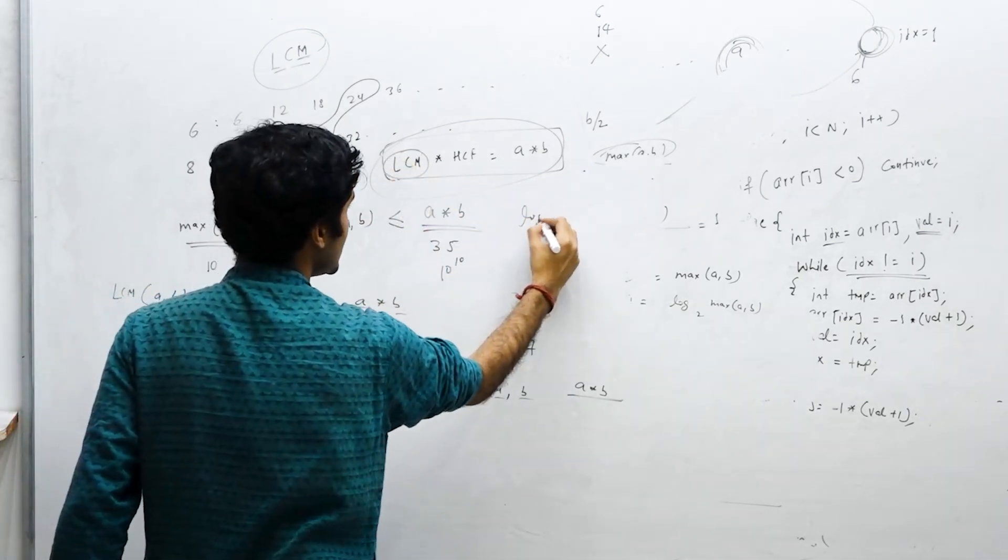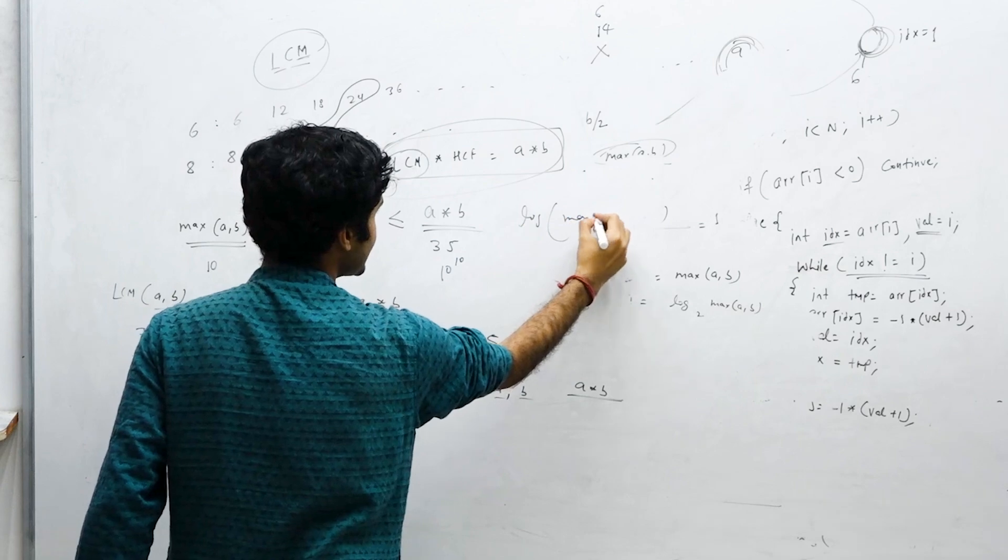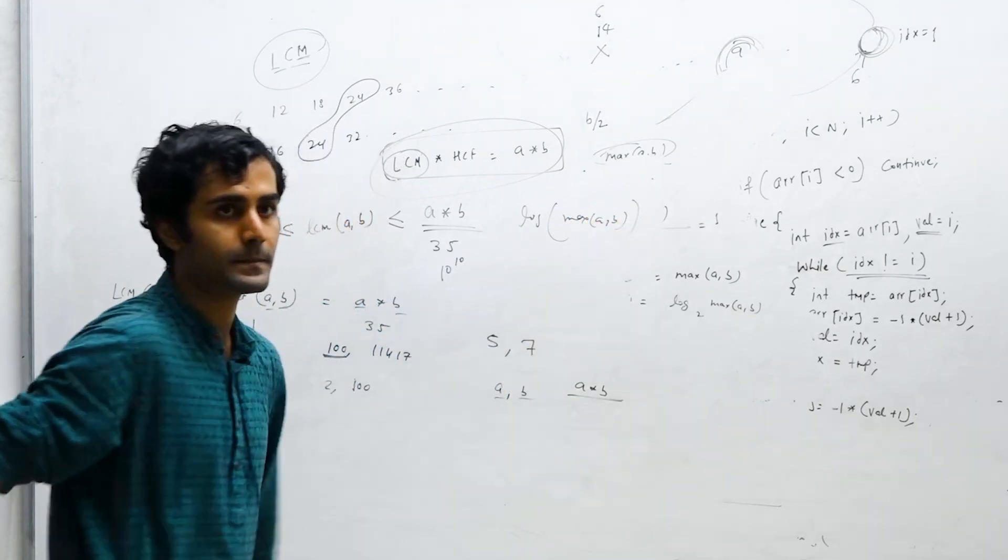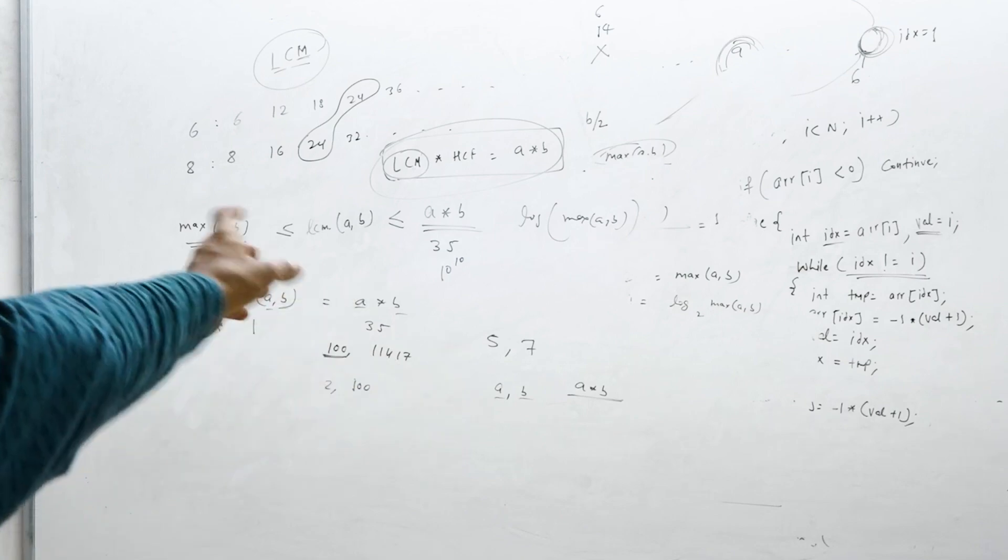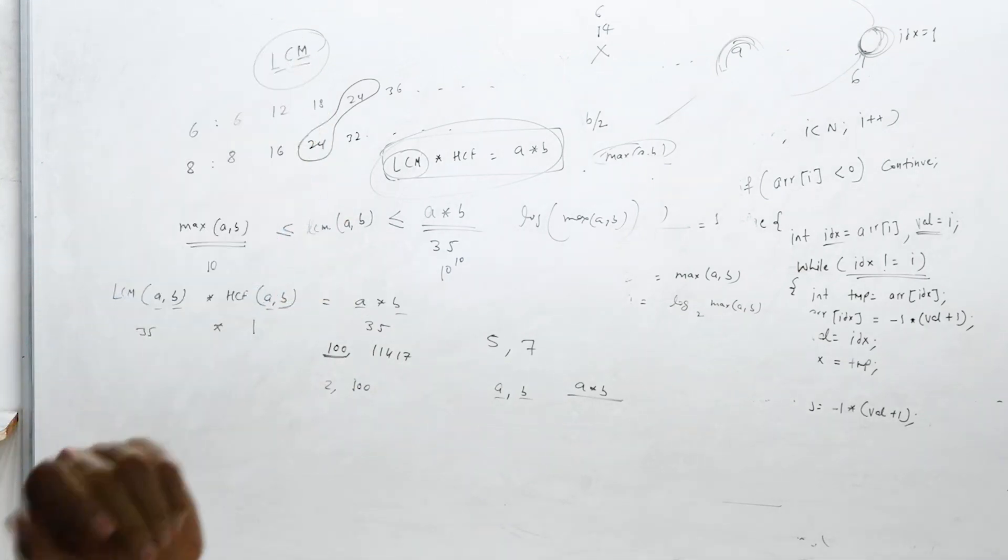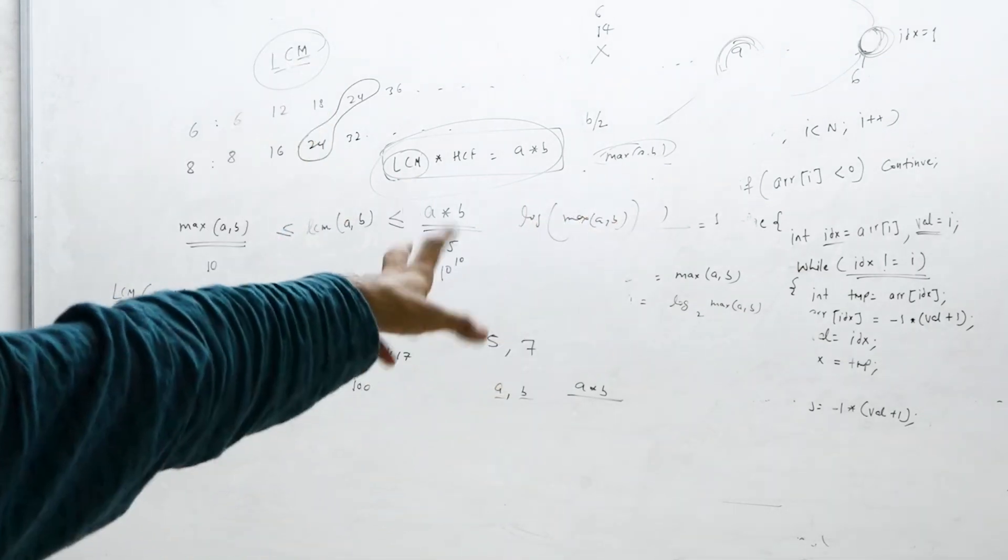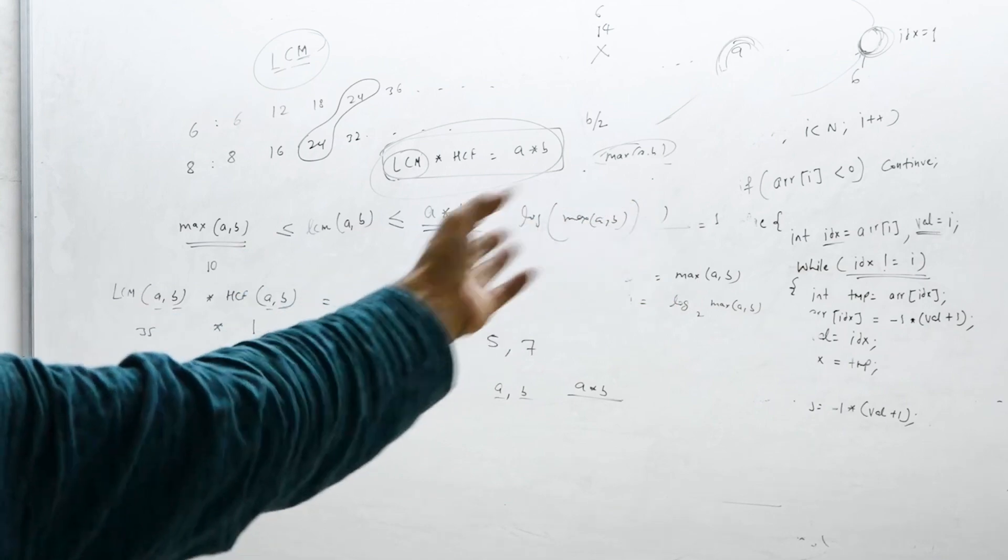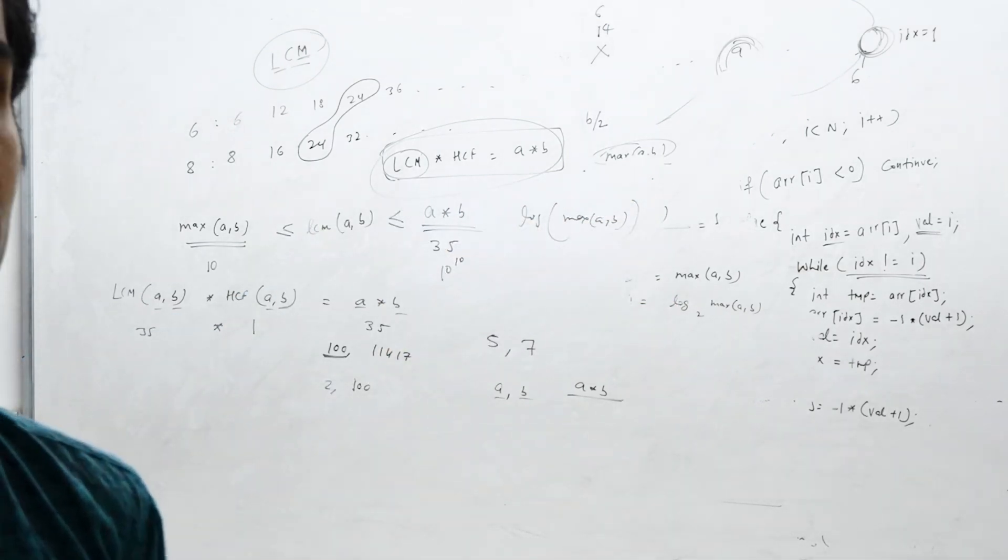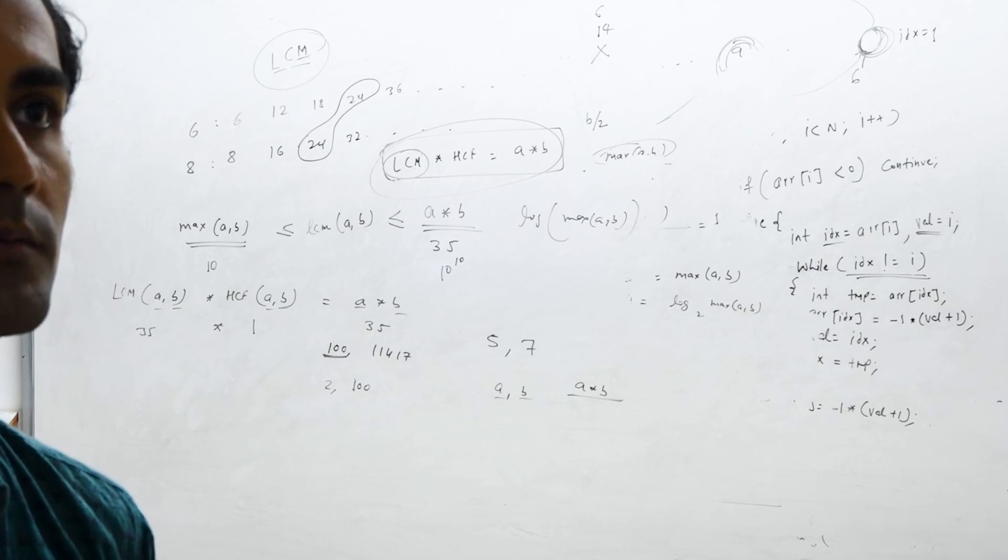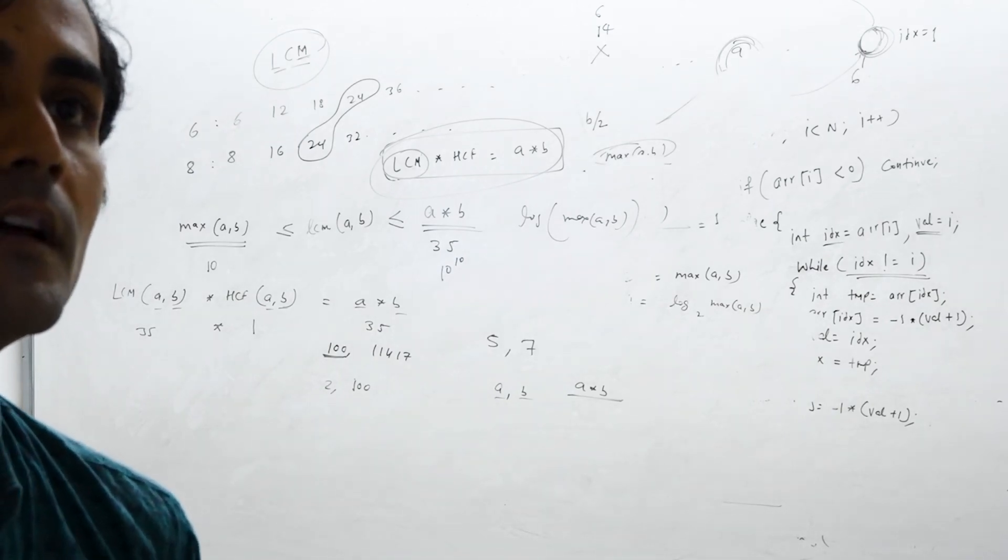Just tell me one thing: if you are aware of this expression, can you figure out the LCM of two numbers in log of max of a comma b time? You can figure that out very easily because HCF can be got in log of this much time, and once you have HCF, then LCM is nothing but a into b upon this number.